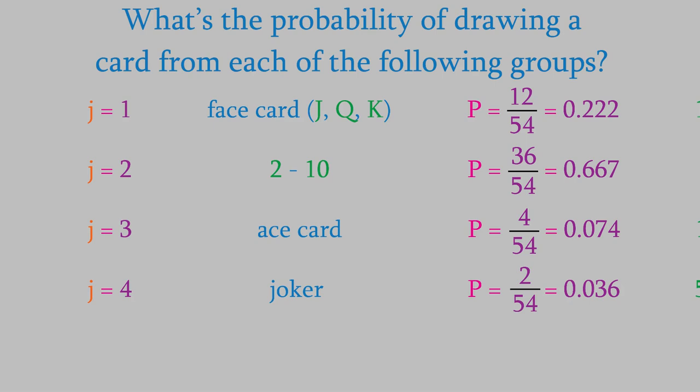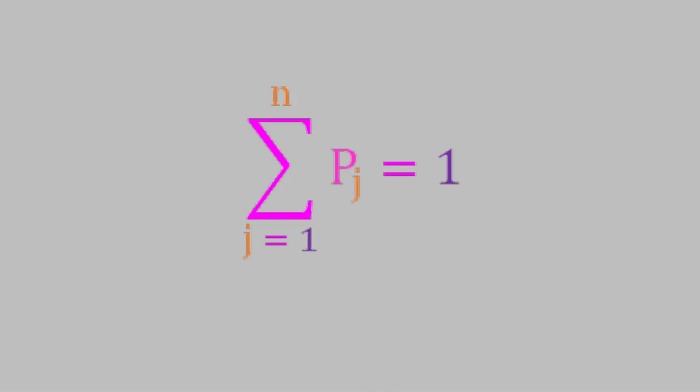Now, let's think about what we actually did there. If we were to express the procedure for determining a probability using an equation, we could write it this way. Here, pj is the probability that the outcome will belong to group j, nj is the number of possible outcomes that belong to group j, and plain n is the total number of possible outcomes. If you look at the probabilities we calculated, one thing you'll notice is that the sum of the probabilities is 1. We can write that this way. In this equation, we're taking the sum of the probabilities that will get a result in the groups from 1 to small n, which is the number of groups. It makes sense that the probabilities add up to 1, because the card we draw must belong to one of the four groups we defined. As you might recall from video 3, when the sum of the probabilities in a distribution is 1, we say that the distribution is normalized.